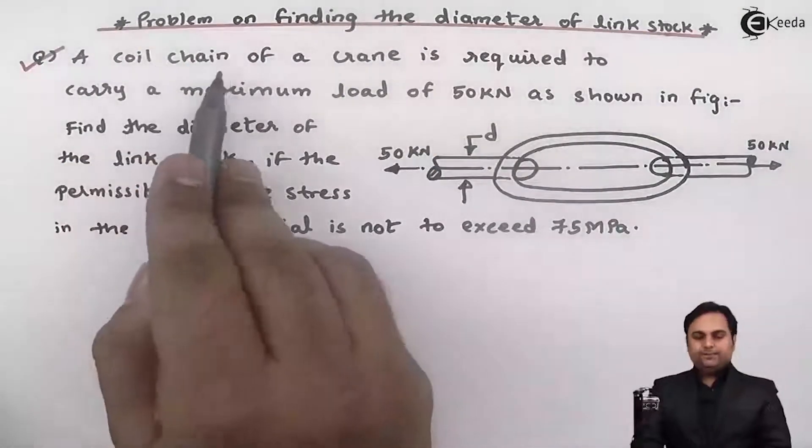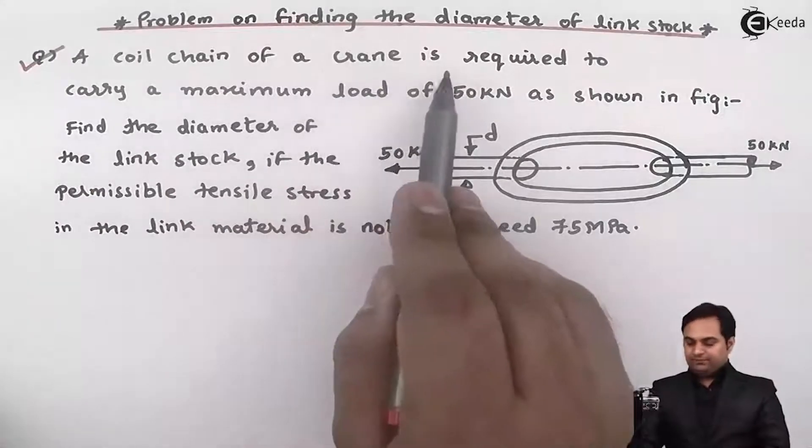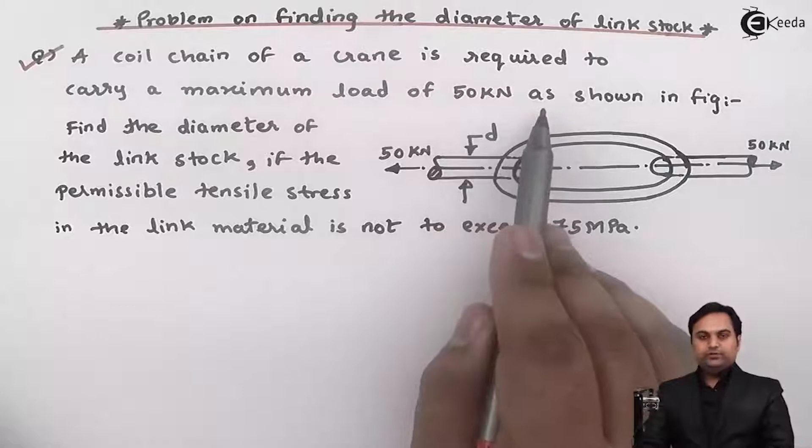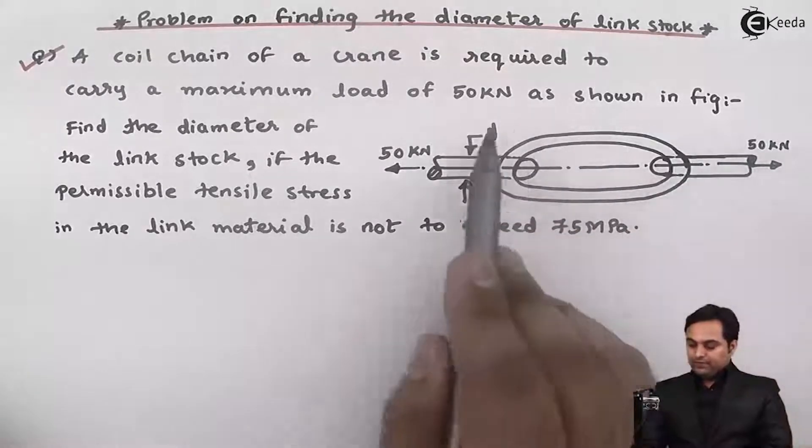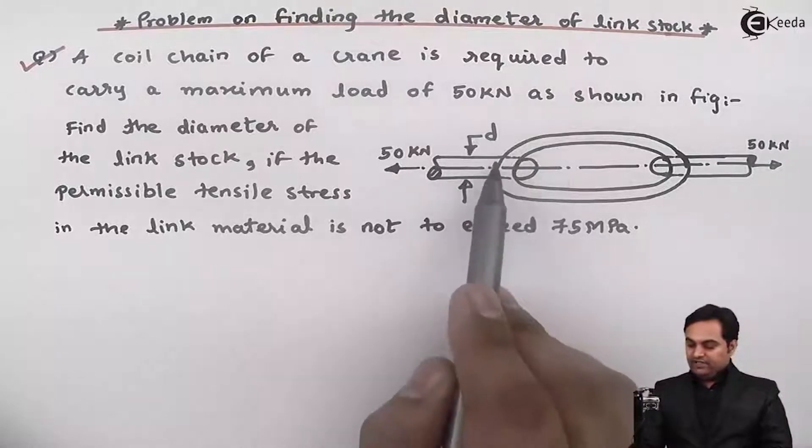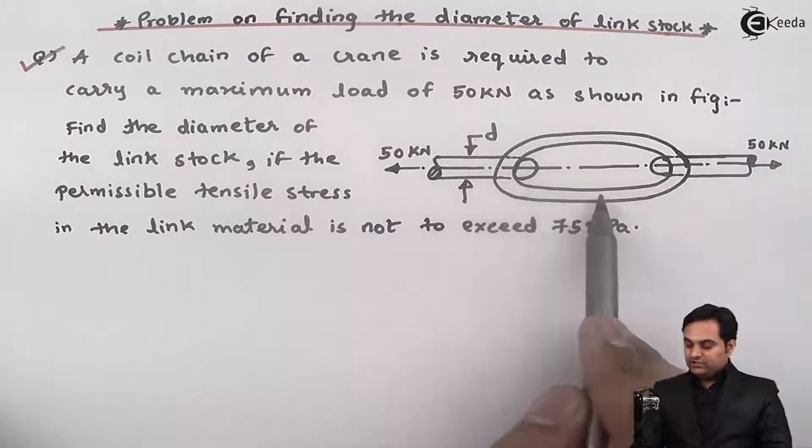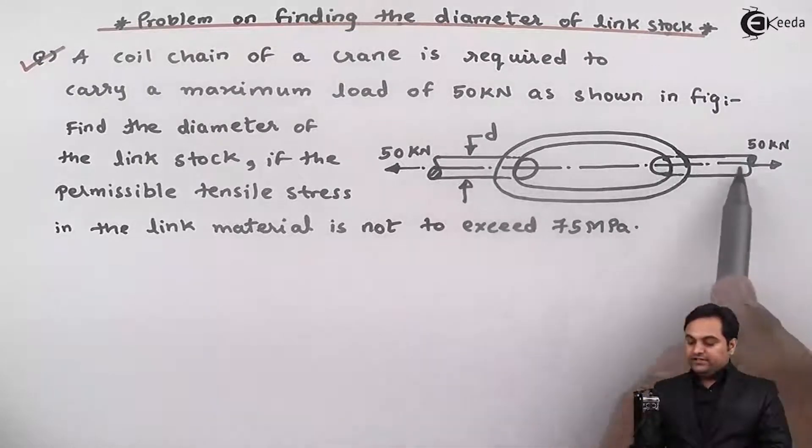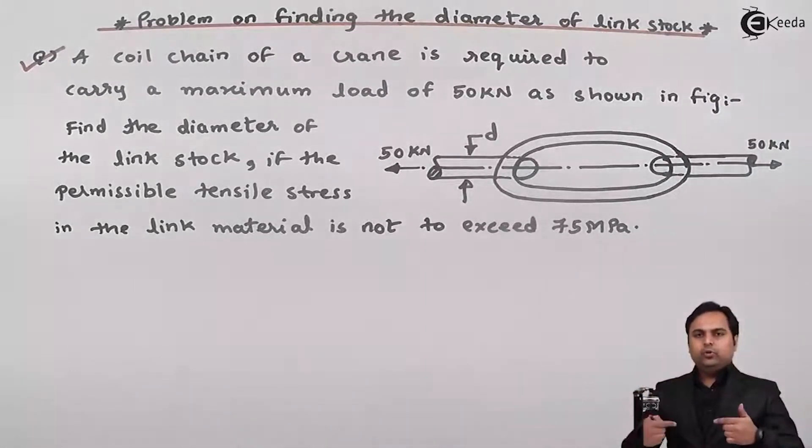A coil chain of a crane is required to carry a maximum load of 50 kilonewton as shown in figure. The diagram is given. In this diagram we have a chain which is this oval section here and it is interconnected with the remaining oval links.